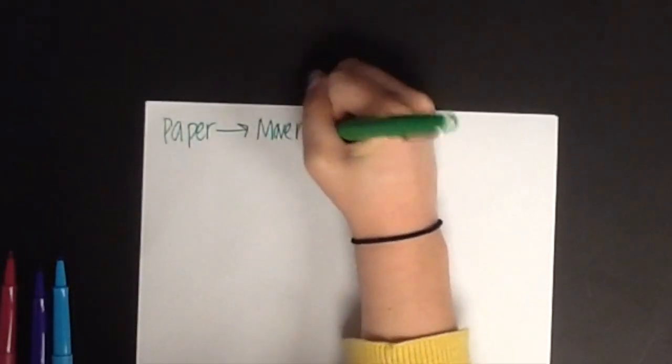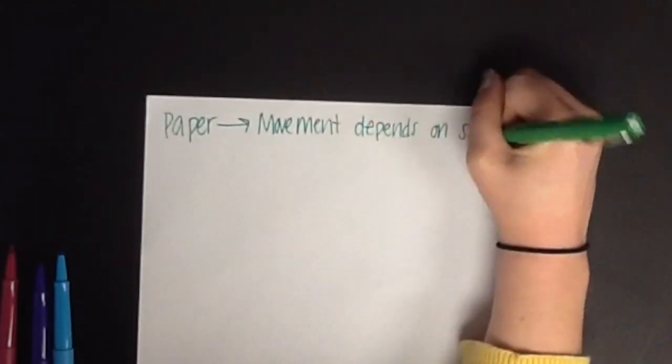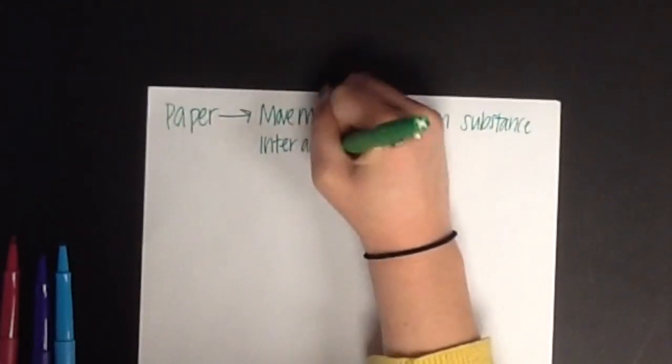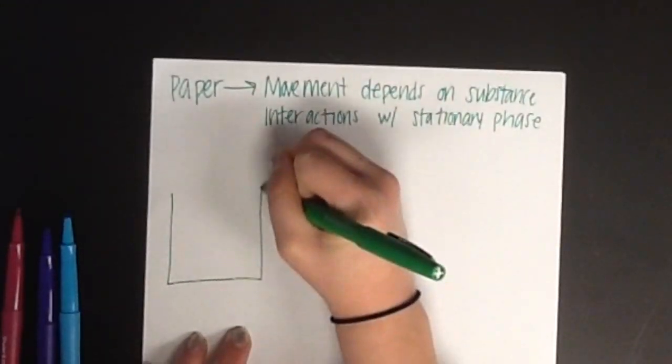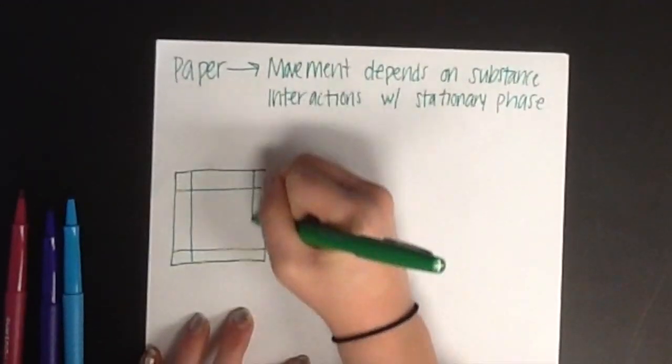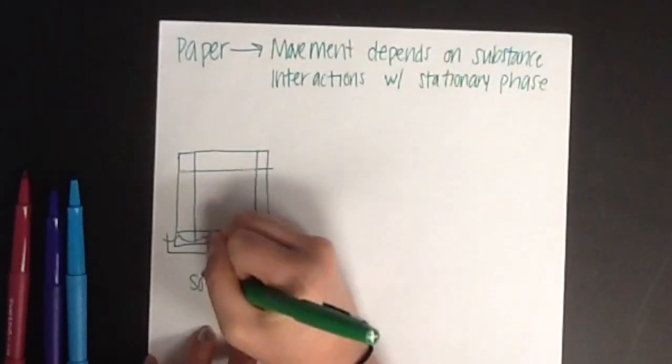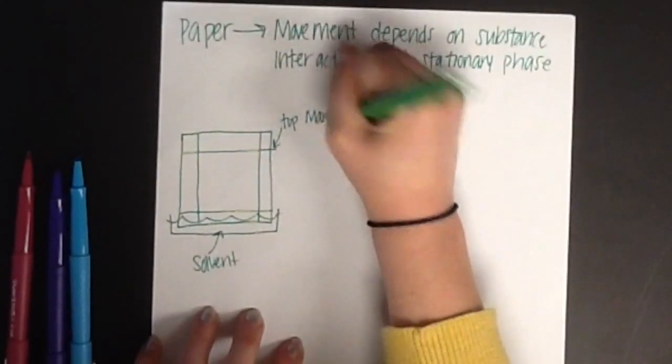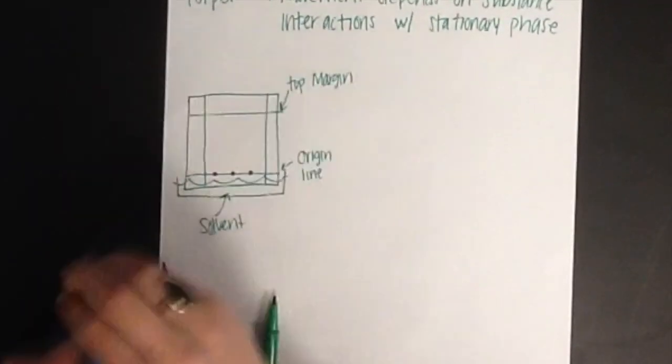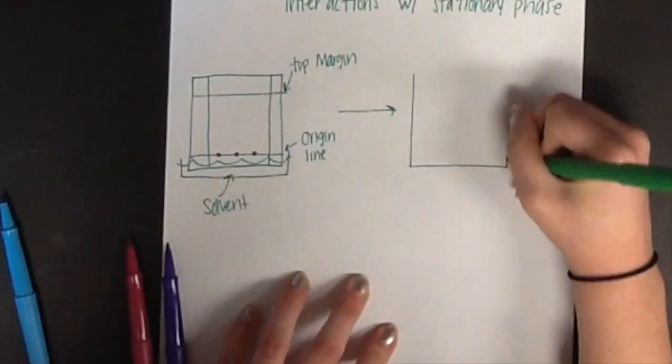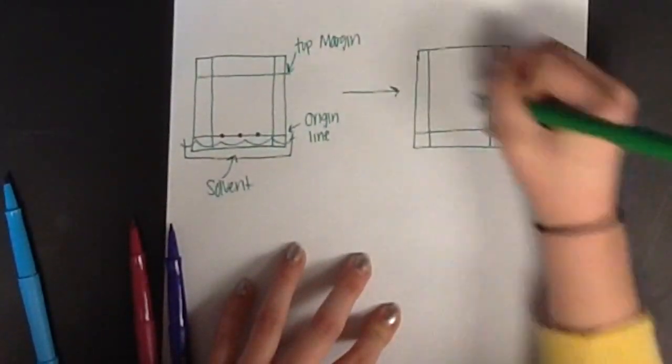In paper chromatography, the movement depends on the substance interactions with the stationary phase. Here you will see a diagram showing the initial and final stages of paper chromatography. In the initial phase, the mixtures have been added to the origin line and placed in a solvent. In the final phase, the solvent has moved up the paper bringing the mixtures with it.